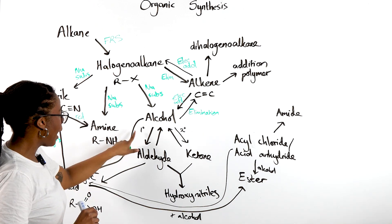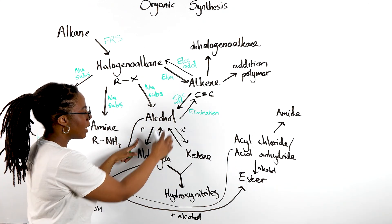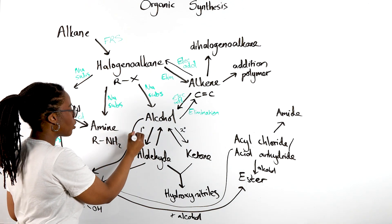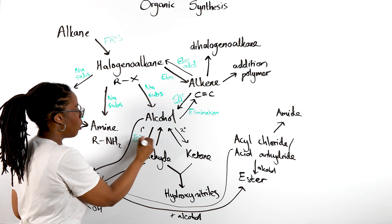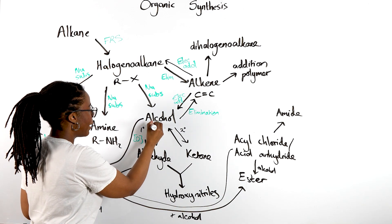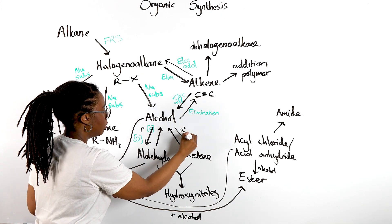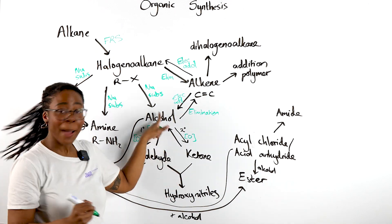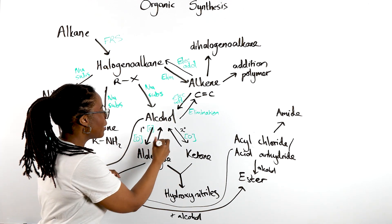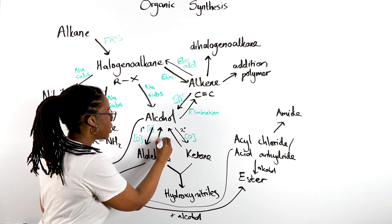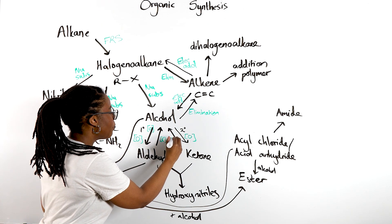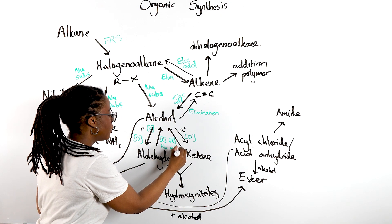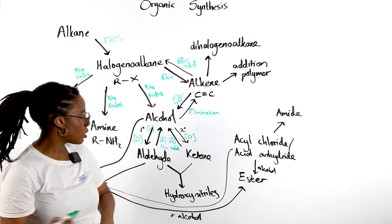If we come down to our alcohol — alcohol to aldehyde, alcohol to ketone, alcohol to carboxylic acid — these are all oxidation, so I'm going to put our [O] in square brackets. Aldehyde or ketones back to alcohols — those are both reduction reactions, but the name of the mechanism is nucleophilic addition, with our H⁻ nucleophile.